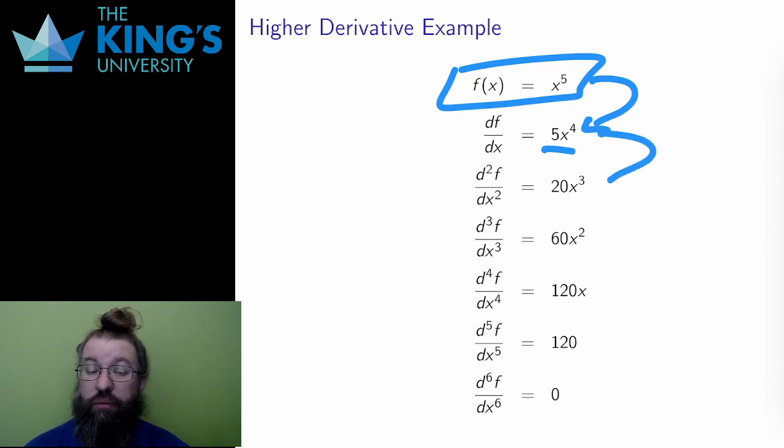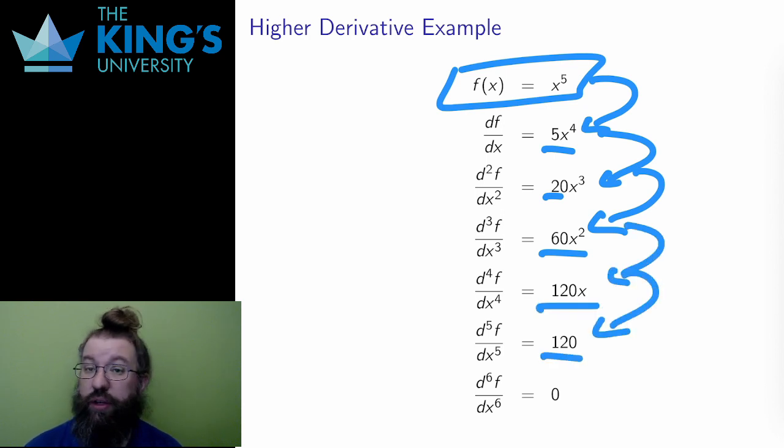For the second, 4 comes down, 4 times 5 is 20, and the exponent again drops to x to the 3. I can continue. 3 derivatives is 60x squared, 4 derivatives is 120x, 5 derivatives is just 120, and 6 derivatives gives 0.